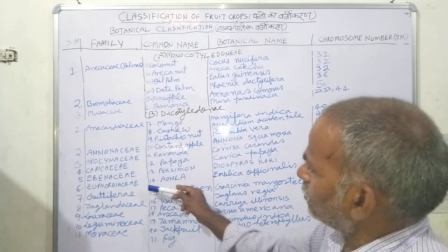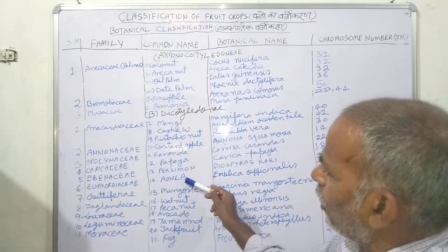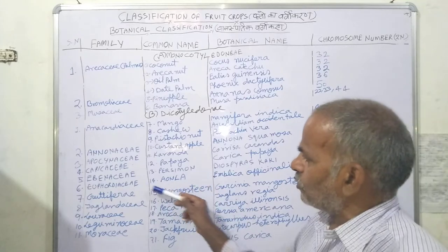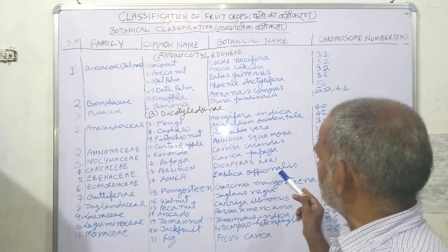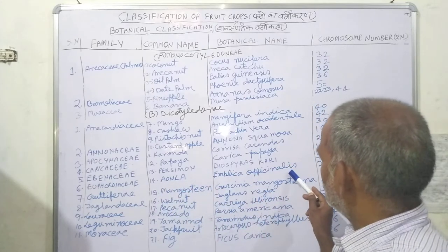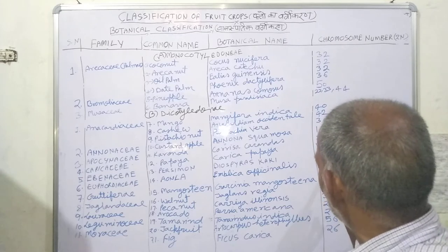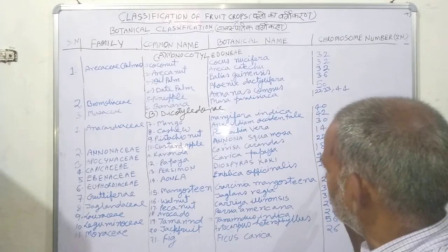For B.Sc. students, the Phyllanthaceae family includes amla, also known as Indian gooseberry, with botanical name Phyllanthus emblica. Its chromosome number is 28.